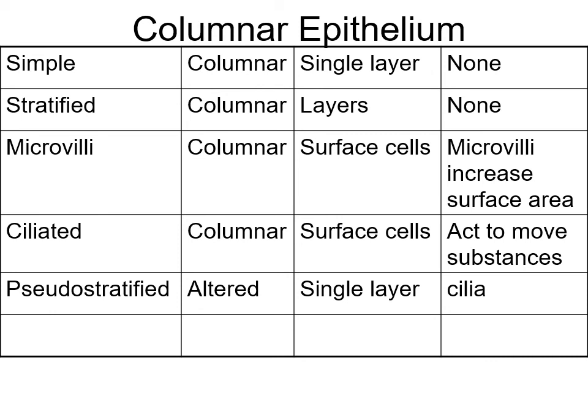Stratified columnar has layers of columnar epithelial cells. Ciliated columnar epithelium has cilia on the top with protein motors that actually push things along - found commonly in the respiratory tract and reproductive tract. Pseudo-stratified means the cells look like they're stratified but they're actually a single layer. You find pseudo-stratified ciliated columnar epithelium in the trachea.